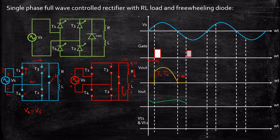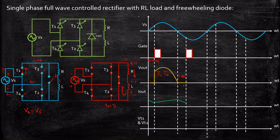When we apply a gate pulse for T3 and T4, they become forward biased and act as short circuit. Current starts flowing through the load again and the inductor starts charging with the polarity in the opposite direction, plus and minus. The voltage Vout again equals Vs because T3 and T4 are conducting while T1 and T2 act as open circuit. So the voltage waveform is similar to what we had with T1 and T2.